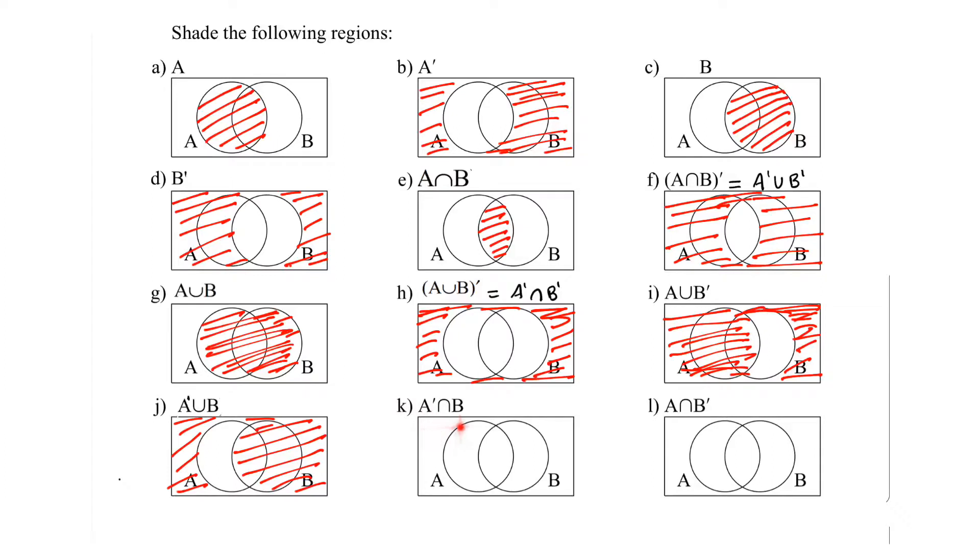Not A intersects B means the only B part. This part here is the only B part. So we shaded this part.